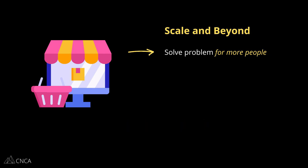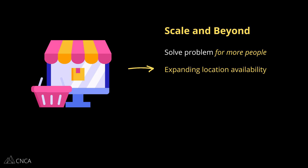From scale and beyond, the app should solve the problem for more and more people. In our marketplace, that usually means starting out in one limited and controlled geographic region and then opening it up to more locations, thus expanding that user base. This phase can also introduce a companion app for service providers so that they can track their work. These kinds of features are only relevant and appropriate to build once you're past those initial foundational steps.